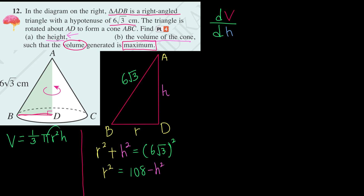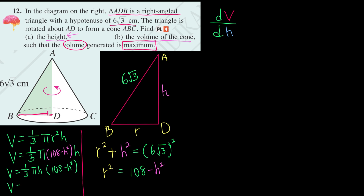We substitute r² into the volume equation. V = 1/3 π (108 − h²) · h. Simplifying by multiplying 1/3 · h through the bracket: V = 1/3 π h (108 − h²), which expands to V = 36πh − 1/3 π h³. So we have the volume in terms of h only.